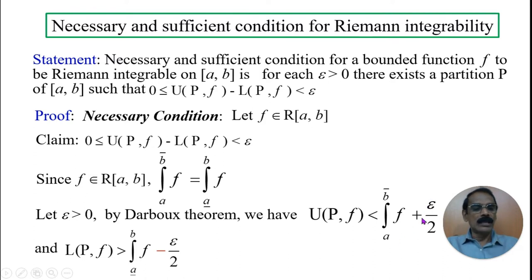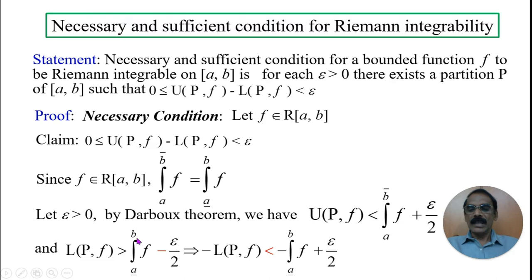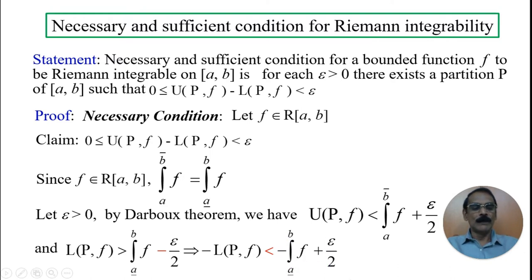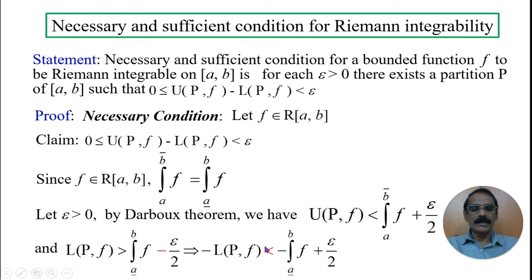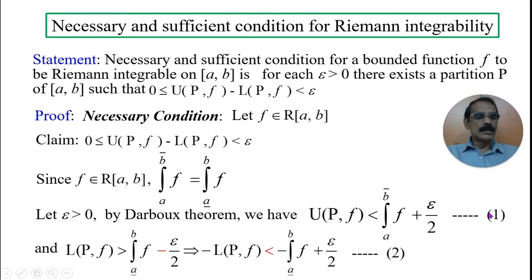If we take epsilon/2, there will be no problem. Now, from L(P, f) > (lower Riemann integral) − epsilon/2, multiplying both sides by −1 (which reverses the inequality), we get: −L(P, f) < −(lower Riemann integral) + epsilon/2. We label this as inequality 1 and inequality 2 respectively.